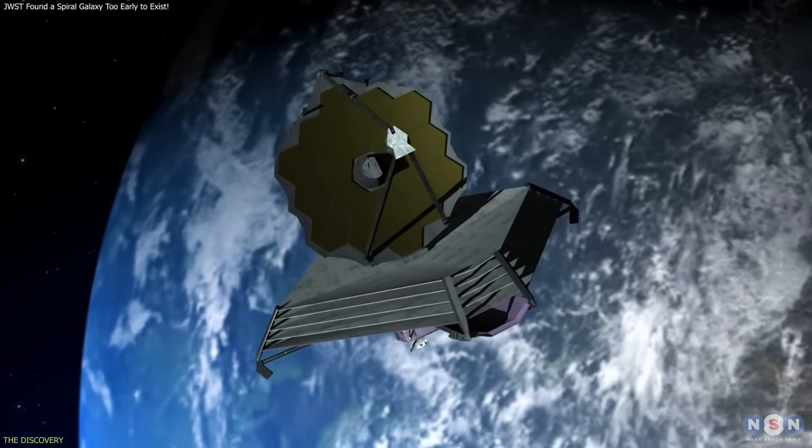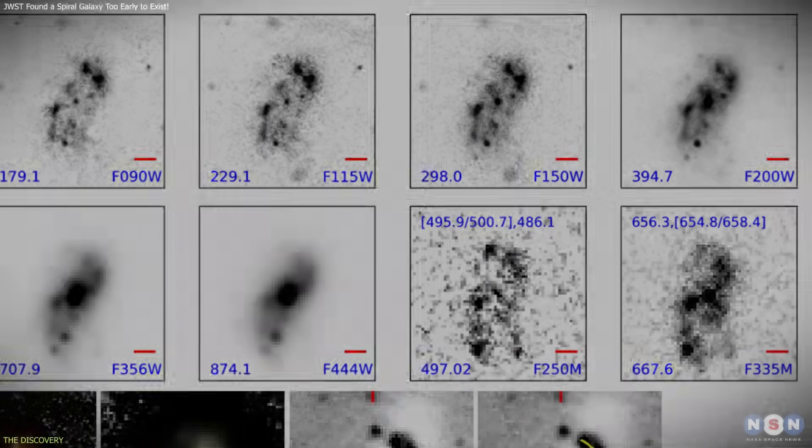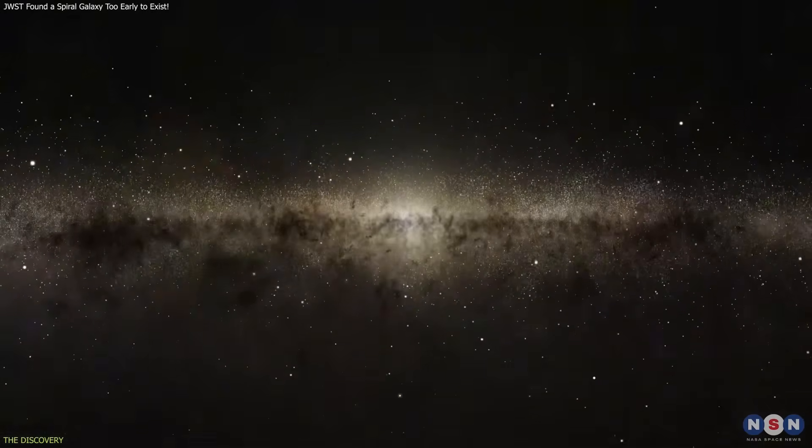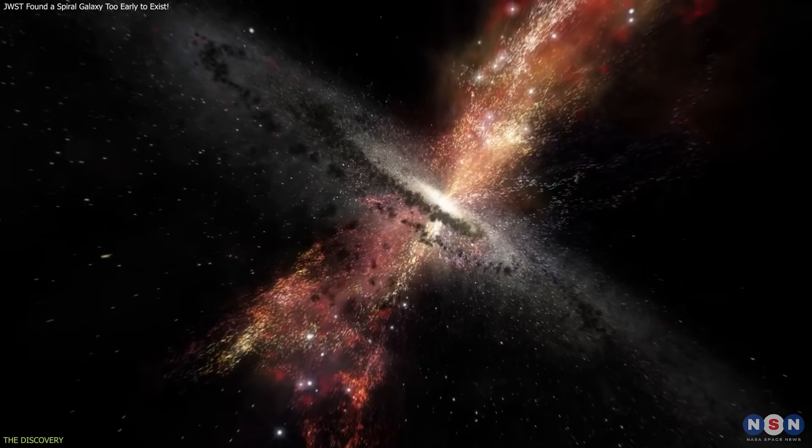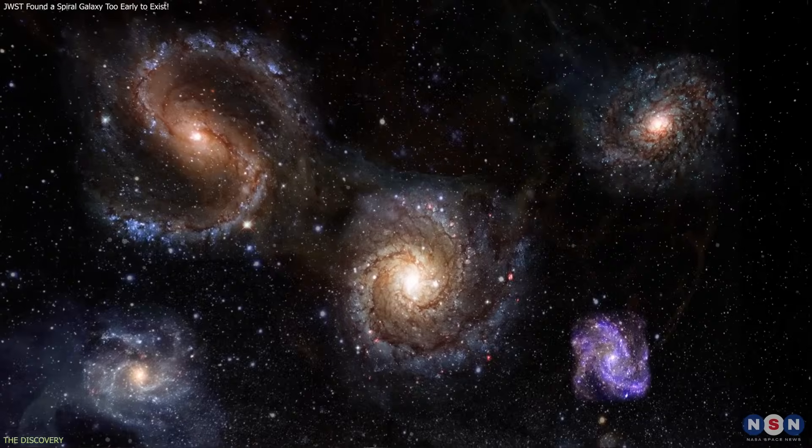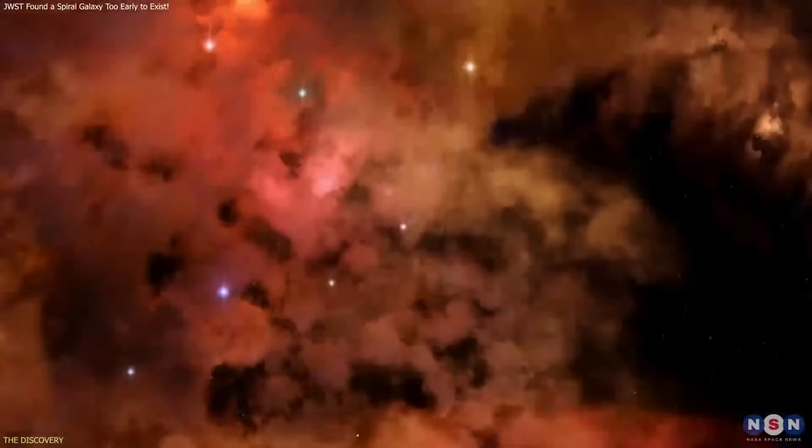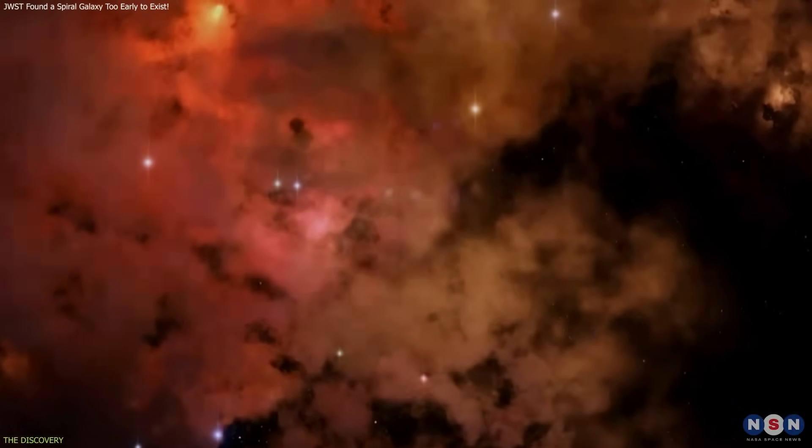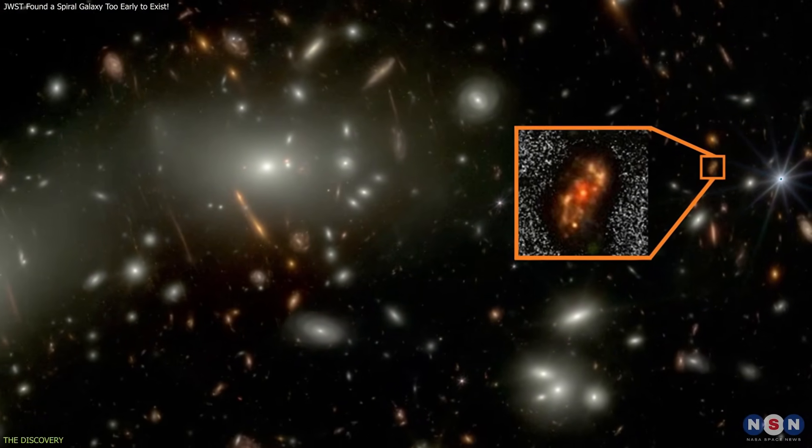The JWST observations used 21 different filters, allowing researchers to examine multiple components of the galaxy simultaneously. Near-UV filters highlighted regions of intense star formation, while optical and infrared filters revealed the older, more stable stellar population in the central disk. These layers together show a system that is both actively forming stars and maintaining coherent large-scale structure. Its star formation rate, around 60 to 65 solar masses per year, is high but typical for early galaxies. What is unusual is how quickly the galaxy appears to have assembled mass. Analysis suggests that about half of its stars formed within roughly 200 million years. That rapid buildup would normally produce a chaotic, clumpy system, yet Alec Nanda has instead reached a symmetric and organized configuration.